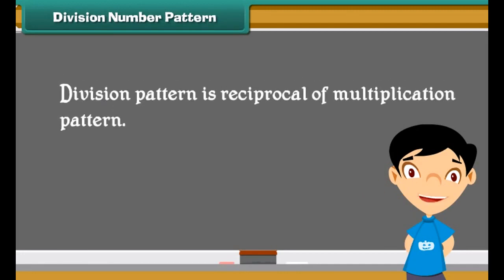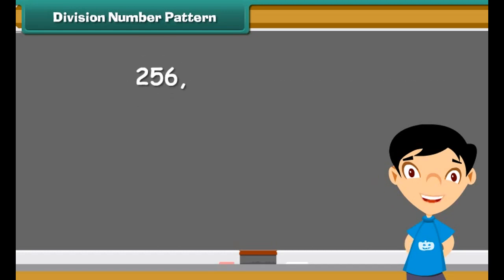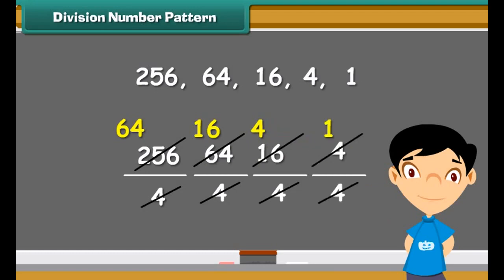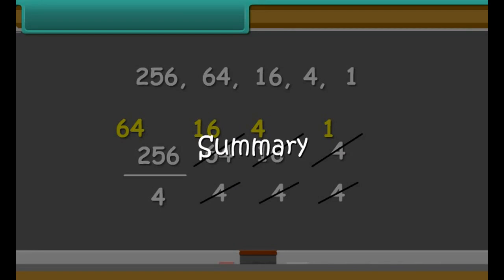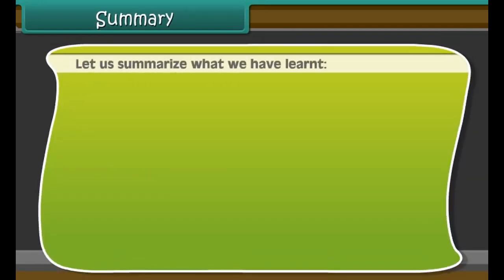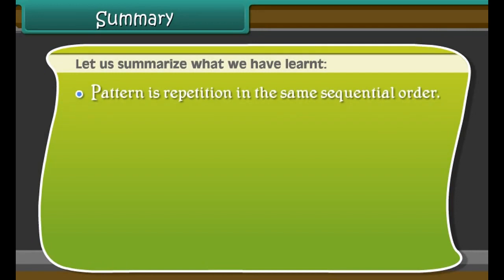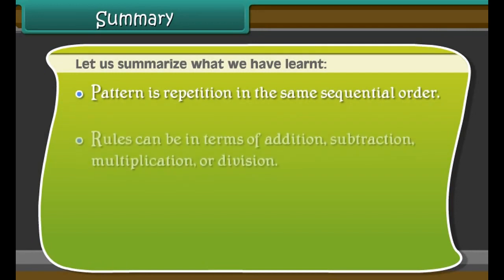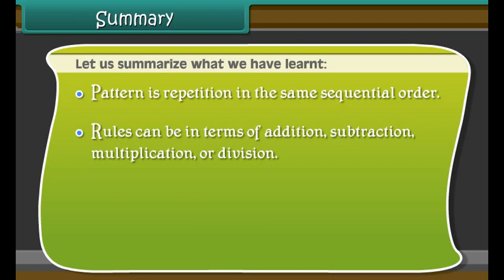Look at the pattern given here: 4, 16, 64, 256, 1024. The differences between two numbers in the series are varying. The difference is 3, 12, 48, and 192. This means they do not follow addition and subtraction pattern. The pattern followed is called multiplication pattern. In this pattern, the next number is obtained by multiplying the number by 4.